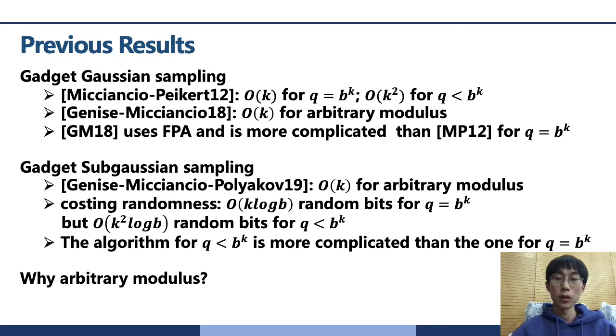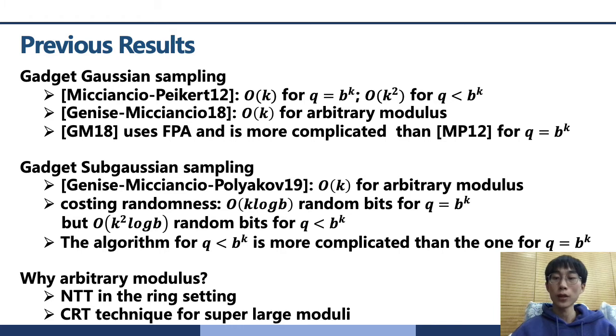In fact, for better performance, many lattice-based systems use the ring structure. For further speed-up in the ring structure, they often choose prime modulus supporting NTT. In addition, many advanced lattice-based cryptosystems, the size of the queue is usually quite large, such as larger than 100 bits. And to be compatible with architecture, we usually apply some CRT modulus. And in these cases, q cannot be power B. So we need an algorithm for this.